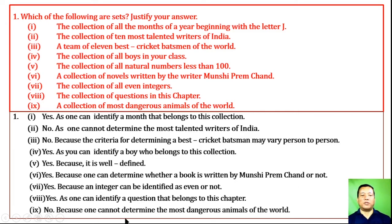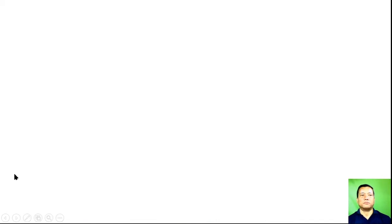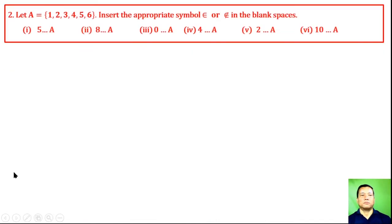One collection is not a set because one cannot determine the most dangerous elements of the world — it is not well-defined. Question 2: Let A = {1, 2, 3, 4, 5, 6}.